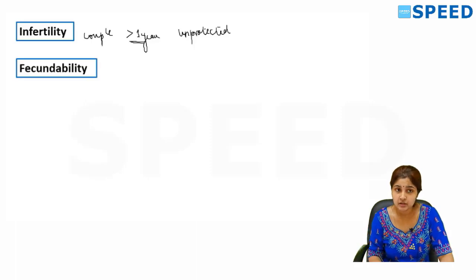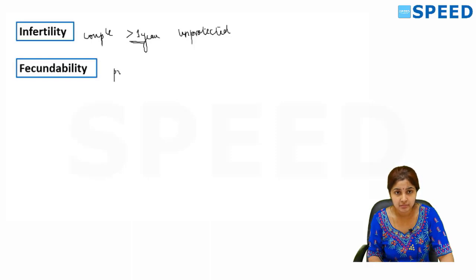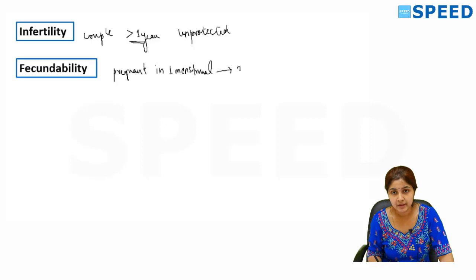There is another term called fecundability, which is the ability for the couple to become pregnant in one cycle — one menstrual cycle or one month — which is around 25% in a normal person.